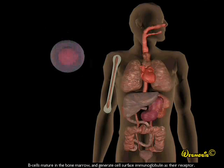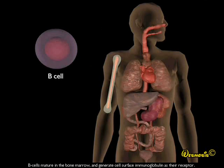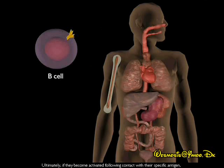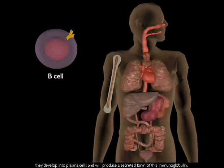B cells mature in the bone marrow and generate cell surface immunoglobulin as their receptor. Ultimately, if they become activated following contact with their specific antigen, they develop into plasma cells and will produce a secreted form of this immunoglobulin. These secreted immunoglobulins are the serum antibodies.